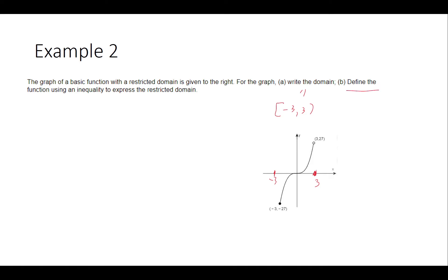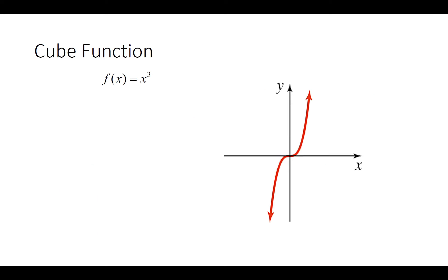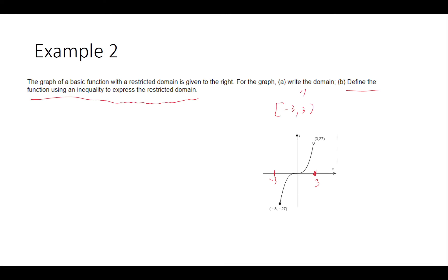To express the restricted domain as an inequality: comparing the graph to our basic functions, it looks like the graph of x cubed. The x values go from negative 3 (greater than or equal to) up to positive 3 (not including). So this is the cubic function with the domain restricted from negative 3 to positive 3.